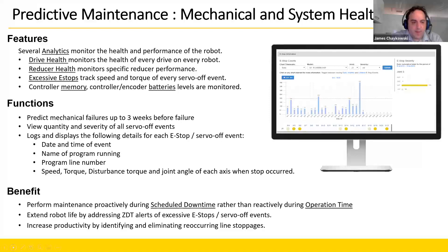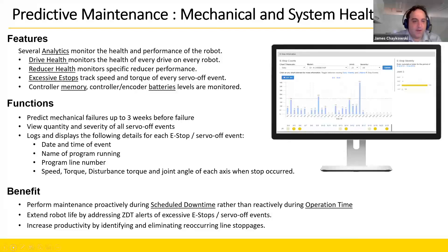Every time the robot stops because of an alarm, it's tracked in this analytic along with a timestamp, date, name of the program running, the line number, and speeds of everything moving. Also in this category, control memory and several battery levels are monitored and reported so they can be replaced before you find out the hard way that batteries were low. ZDT will help keep your robots ready to go — you usually find out about dead batteries during a power outage, which is not a fun thing.